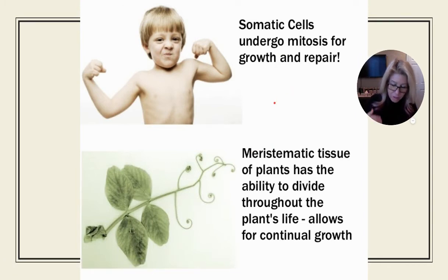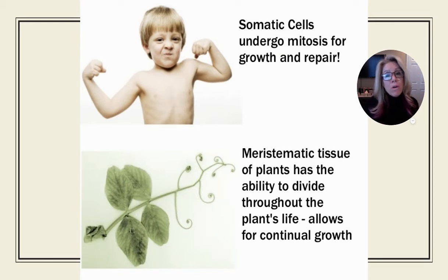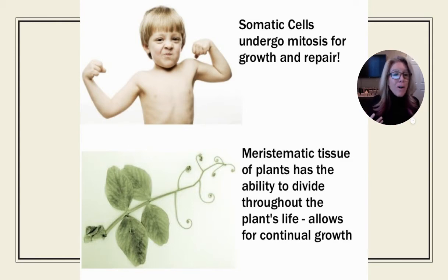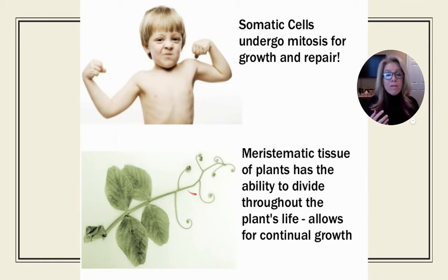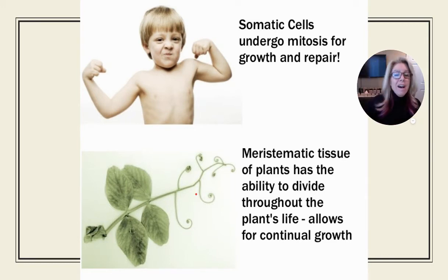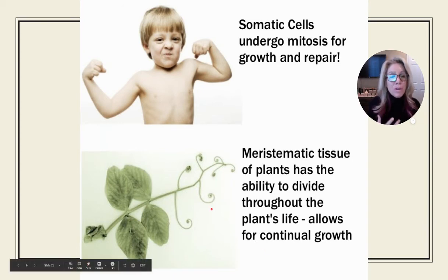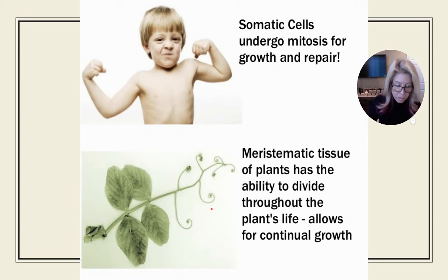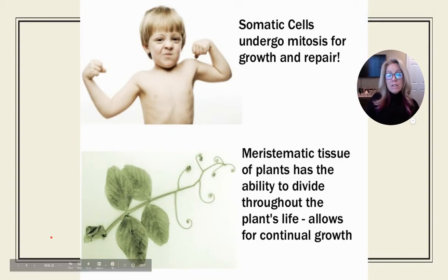The function of mitosis by somatic cells is for growth and repair. As an adult, most of my body is not growing, but repair still occurs. Plants are always growing — they have apical meristems on either end that allow continued growth throughout their life. So for plants, meristematic tissue can always undergo mitosis.